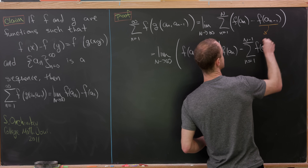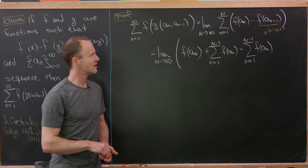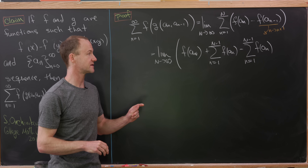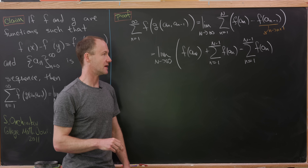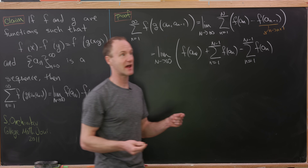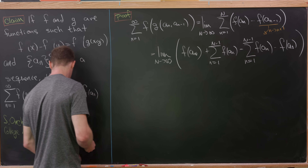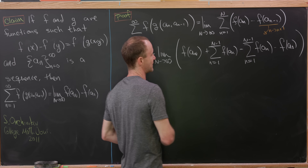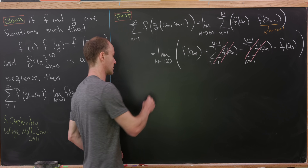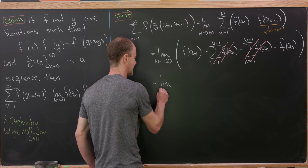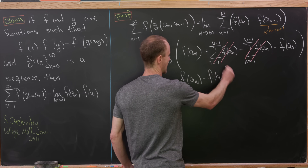For this portion, I'll take all of the n's and replace them with n plus 1s, which re-indexes this. That should push our starting point down to n equals 0, and I've already pushed the ending point to N minus 1. I'll take that first term out, giving f of a_0. Now observe that the middle sum cancels with the other sum, and we're left with exactly what we need: the limit as n goes to infinity of f of a_n minus f of a_0.